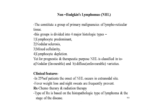Non-Hodgkin's lymphomas (NHL) constitute a group of primary malignancies of lymphoreticular tissues. This group is divided into four major histologic types: lymphocyte predominant, nodular sclerosis, mixed cellularity, and lymphocyte depletion. For prognostic and therapeutic purposes, NHL is classified into nodular (favorable) and diffuse (unfavorable) varieties. In 25% of patients, the onset of NHL occurs at an extranodal site. Fever, weight loss, and night sweats are frequently present. Treatment is chemotherapy and radiation therapy, based on histopathological type and stage of disease.